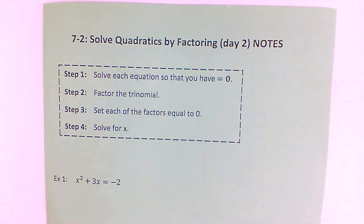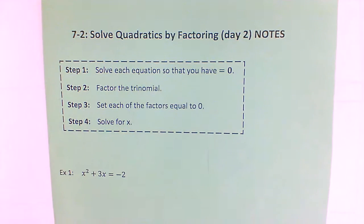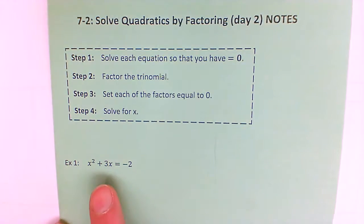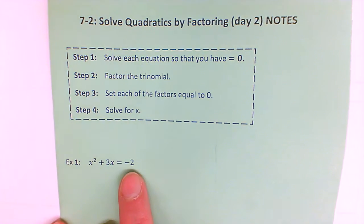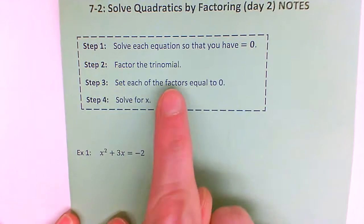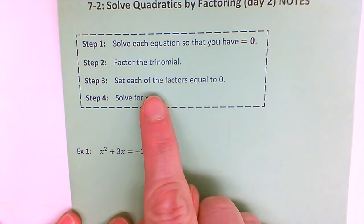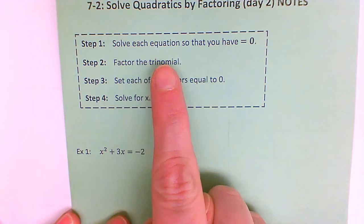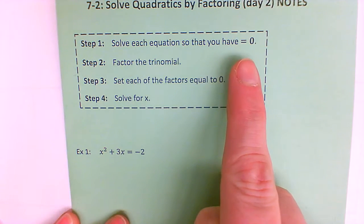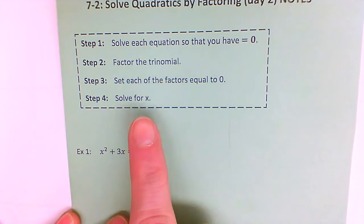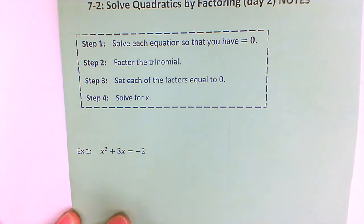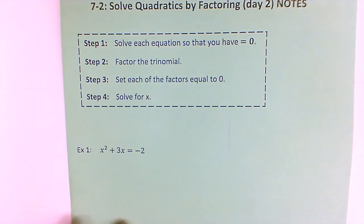What we're doing today is the same idea, but we are going to have some different kinds of factoring problems. Also, not all of our equations are going to be set equal to zero, so that's going to add a step in. We're going to have to solve each equation so that we have equals zero, then factor the trinomial, set the factors equal to zero, and solve for x.